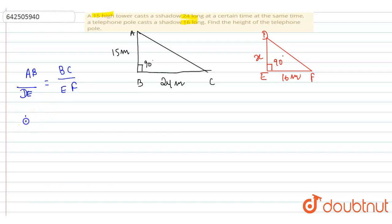The value of AB is 15, and DE is X. That will be equal to BC which is 24, and EF which is 16. Cross multiplying, we get the value of X to be 16 times 15 divided by 24. 16 and 24 divided by 8 gives 2 and 3. 3 divides 15 to give 5. So the value of X is 10.